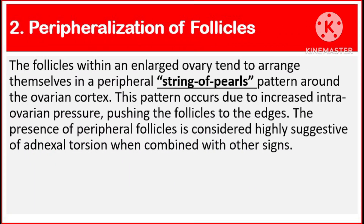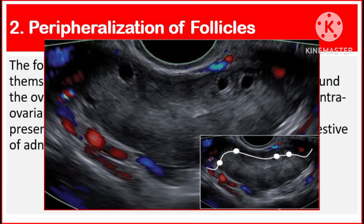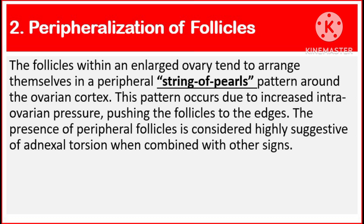Number 2: Peripheralization of follicles. The follicles within an enlarged ovary tend to arrange themselves in a peripheral string-of-beads pattern around the ovarian cortex. This pattern occurs due to increased intra-ovarian pressure pushing the follicles to the edges. The presence of peripheral follicles is considered highly suggestive of adnexal torsion when combined with other signs.